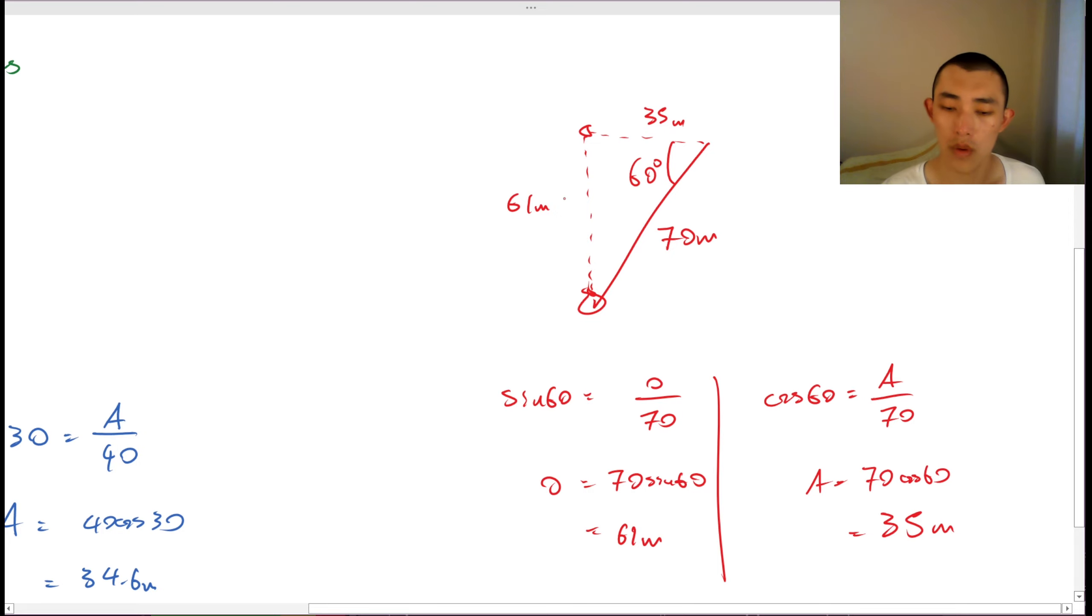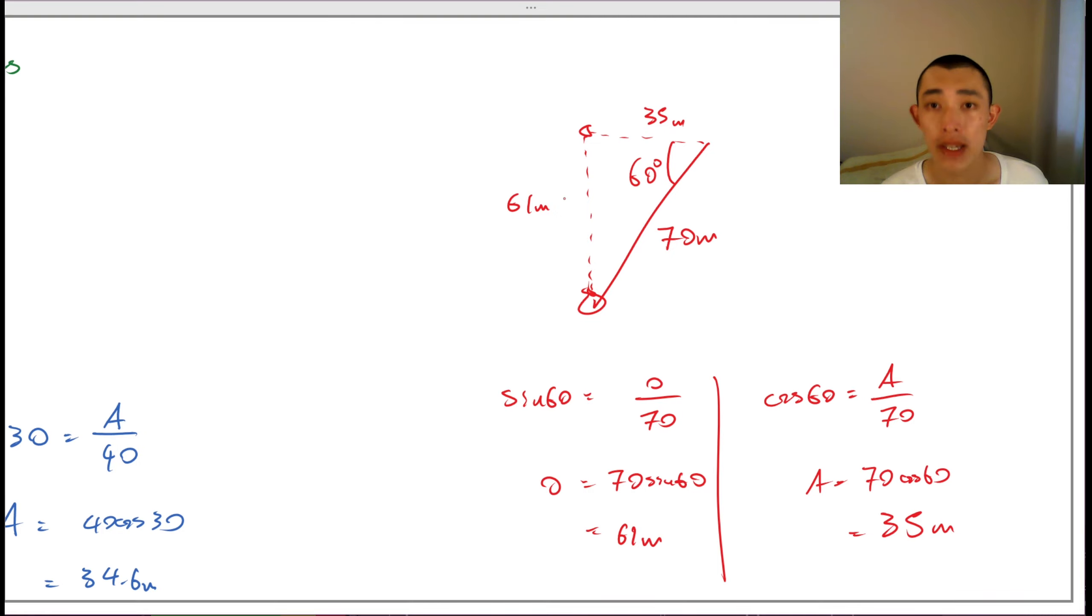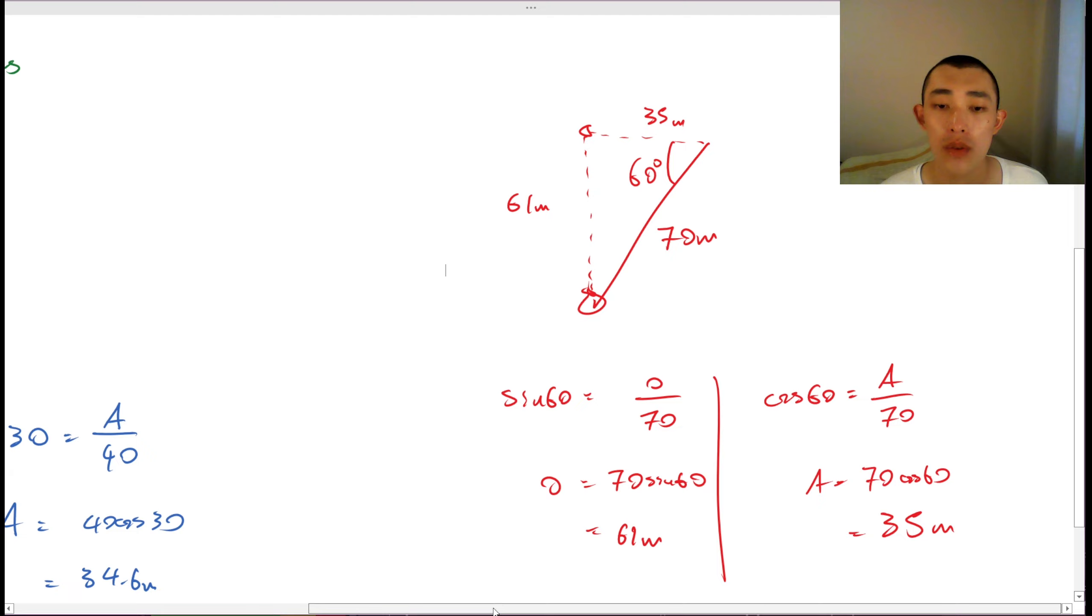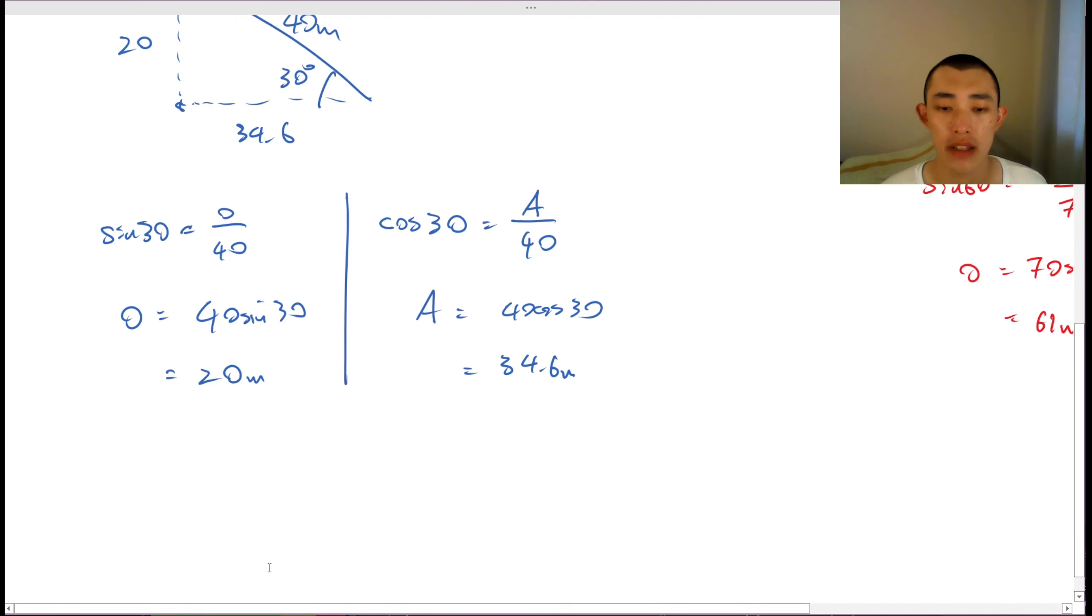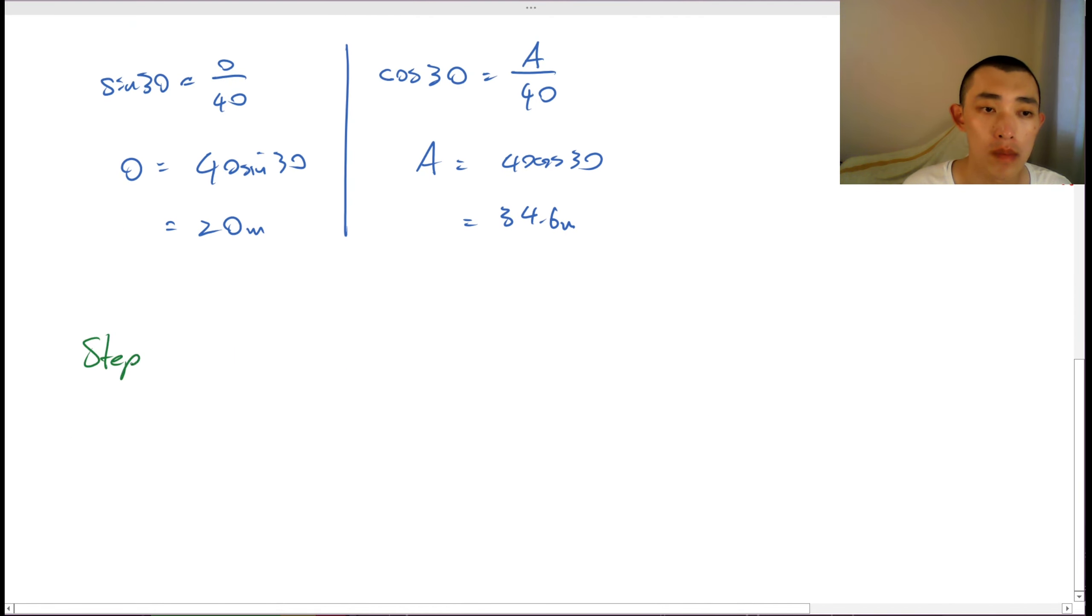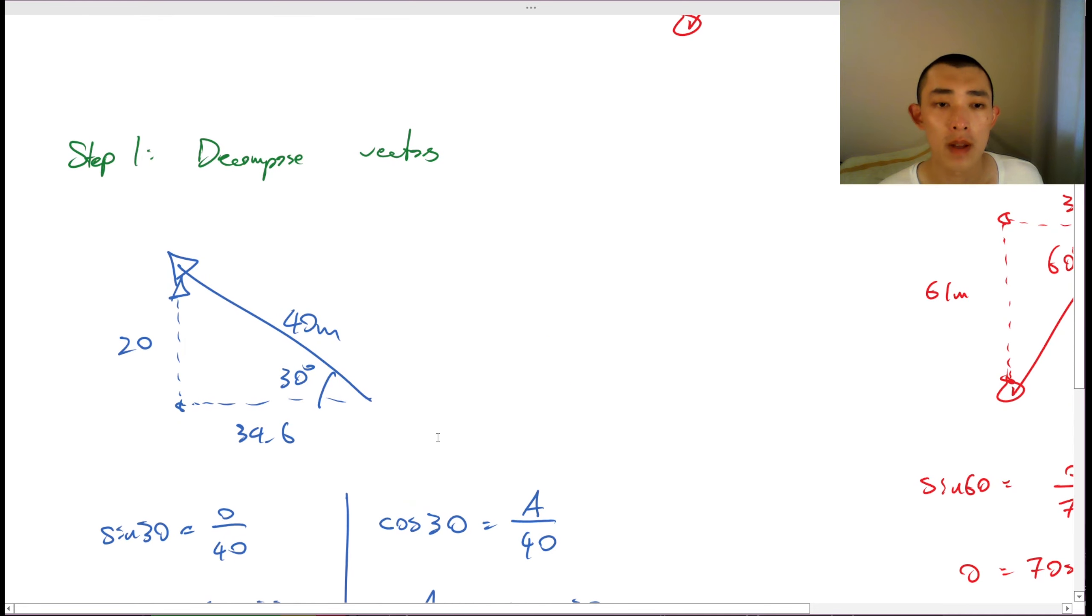So the second step is to add together the components. So we can do a sigma x. We can do a sigma x. We're going to add this one. And we're going to add this one.